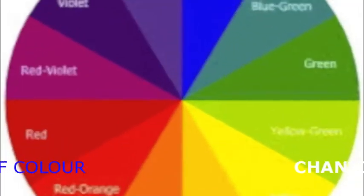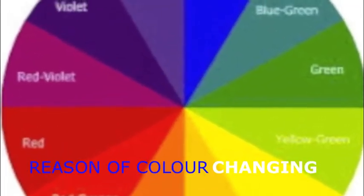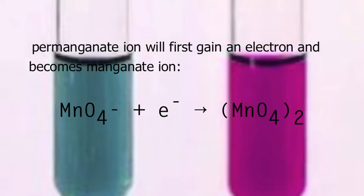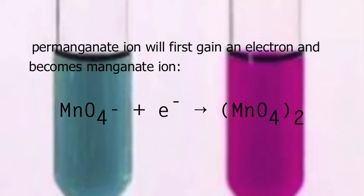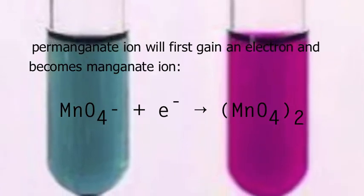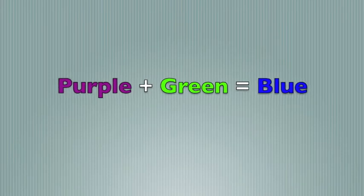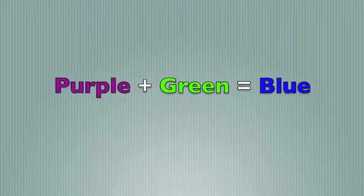The reason why there's color change is simple. Firstly, the permanganate ions are reduced to manganate ions. The equation is as follows. The compound on the left is purple and the one on the right is green. As the reaction is going, there might be some purple mixed with the green, hence giving a blue look at the beginning.